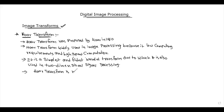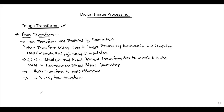The Haar transform is a real and orthogonal transform. It is also a very fast transform. It is separable and symmetric.